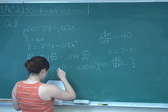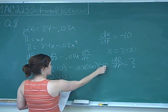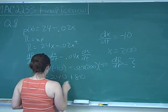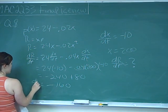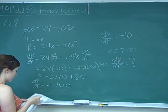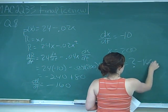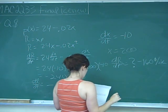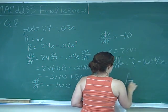Substituting X equals 200 and dX over dT equals negative 10, the second term gives 0.04 times 200 times 10, which is 80. But this is a negative times a negative, so it's plus 80. Combined with 24 times negative 10, which is negative 240, we get negative 160 as dR over dT. So the revenue is decreasing by $160 per week, and that is answer choice A.